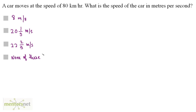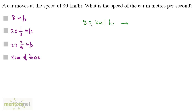A car moves at a speed of 80 kilometers per hour. What is the speed of the car in meters per second? You have been given the speed of the car as 80 kilometers per hour.